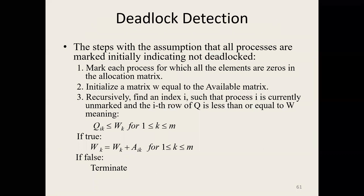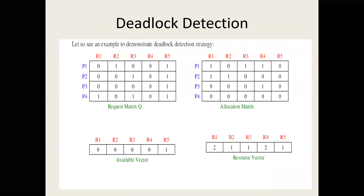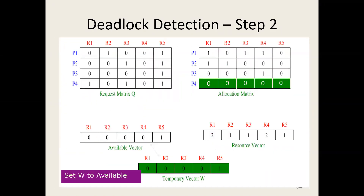The third step is to recursively find an index i such that process i is currently unmarked and the i-th row of Q is less than or equal to W. That means we check whether a process in the request matrix can be satisfied from each index.